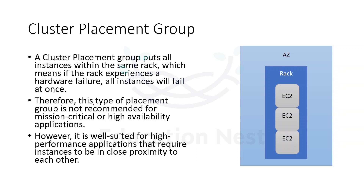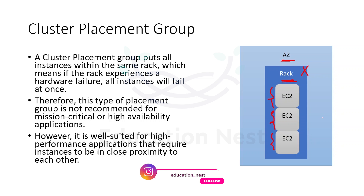With the cluster placement group, all your EC2 instances are placed in the same rack within one availability zone. If that one rack goes down, all your instances will go down. This is required when you need a high-performance application where close proximity is needed to avoid network latency. However, if the workload is mission-critical or you need high availability, this is not recommended because if one rack fails, the entire application goes down and availability is affected.